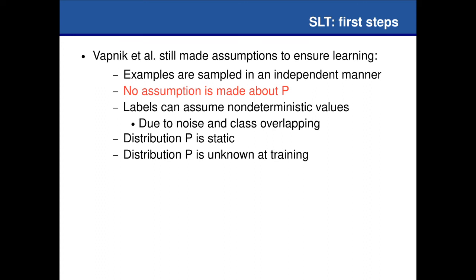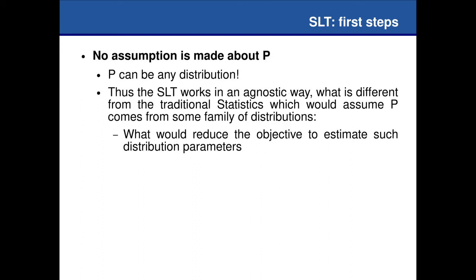No assumption is made about the joint probability distribution p. This basically means that we are agnostic in relation to p — the statistical learning theory does not assume a given family of distributions. Gaussians, Weibull, Poisson — it doesn't matter. We can work with any kind of data distribution. This makes the statistical learning theory general enough to deal with any kind of joint probability distribution.